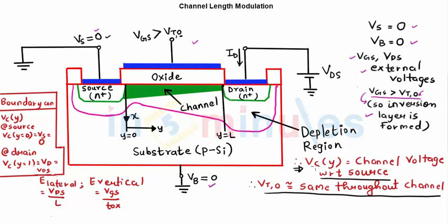This is the place where my channel will be formed, so I'm going to write the voltage of my channel with respect to source as VC(Y). Y can get different values from zero to L. I'll also make an assumption that the entire channel will have a threshold voltage which will be nearly constant.